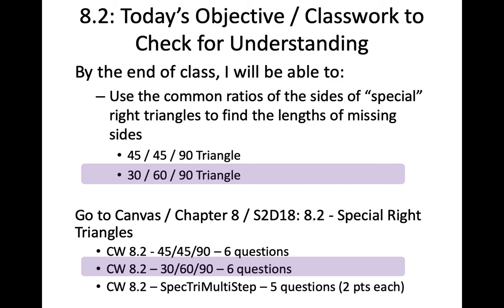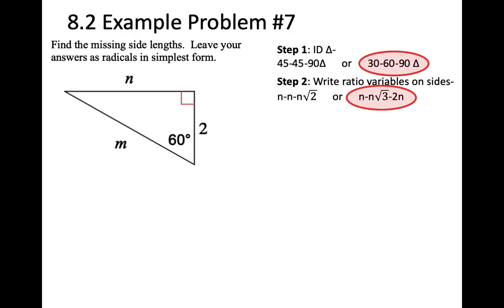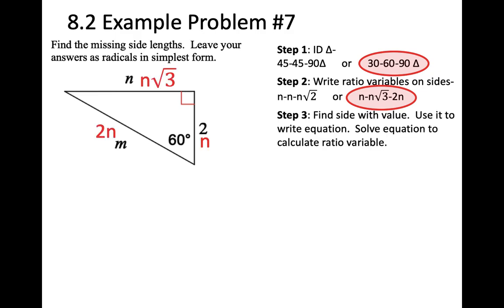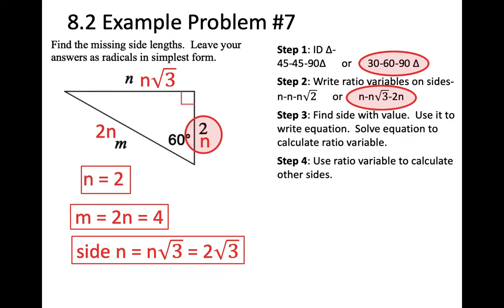Those are the 45-45-90 examples. Now let's try some 30-60-90 problems — you can also practice these in classwork 8-2. Our first example: it's a 30-60-90 triangle, so we put on ratios N, N root 3, and 2N. Find the side with a constant — N equals 2. Use that ratio variable to solve the other sides: side M equals 2N, so that's 4. Side N equals N root 3, and if N is 2, then side N equals 2 root 3.